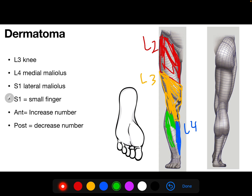Regarding L5, it takes most of the remaining anterior and lateral parts of the leg. There will be a continuation of L5 to the foot — the middle parts of the foot will be L4, and the first half of the first toe will be a continuation of L5.